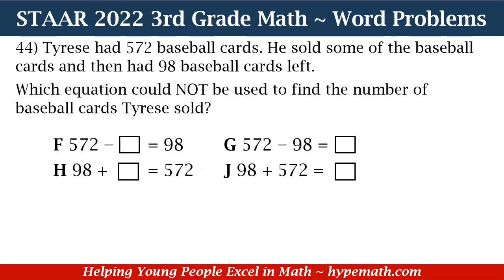Let's dive into question number 44. Tyrese had 572 baseball cards. He sold some of the baseball cards and then had 98 baseball cards left. Which equation could NOT be used to find the number of baseball cards Tyrese sold? Is it F: 572 minus a square equals 98? G: 572 minus 98 equals a square? H: 98 plus a square equals 572? Or J: 98 plus 572 equals a square?